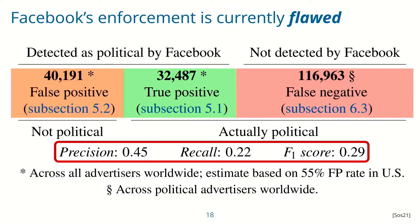To summarize these results: Facebook's enforcement is currently quite flawed. We computed classification metrics — for example, the F1 score, which ranges between 0 and 1 with 1 being perfect classification, is only 0.29 for this system. So there are quite a large number of ads where Facebook's system makes the incorrect decision. Half of the detected ads should not have been detected, harming availability of ads on the platform, and Facebook misses at least as many ads as they actually detect, which harms integrity of the platform because malicious ads do reach users.